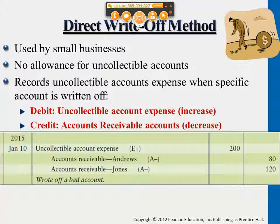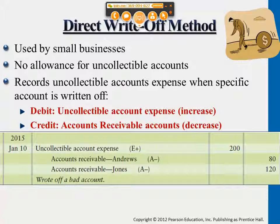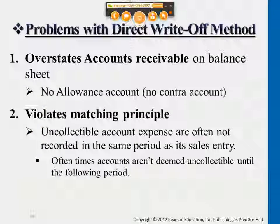Also, if we look at 2014's financial statement, you will find accounts receivables overstated because these two accounts were not written off earlier. So the direct write-off method — the reason why we're not using it is because of these matching principle and overstatement issues.